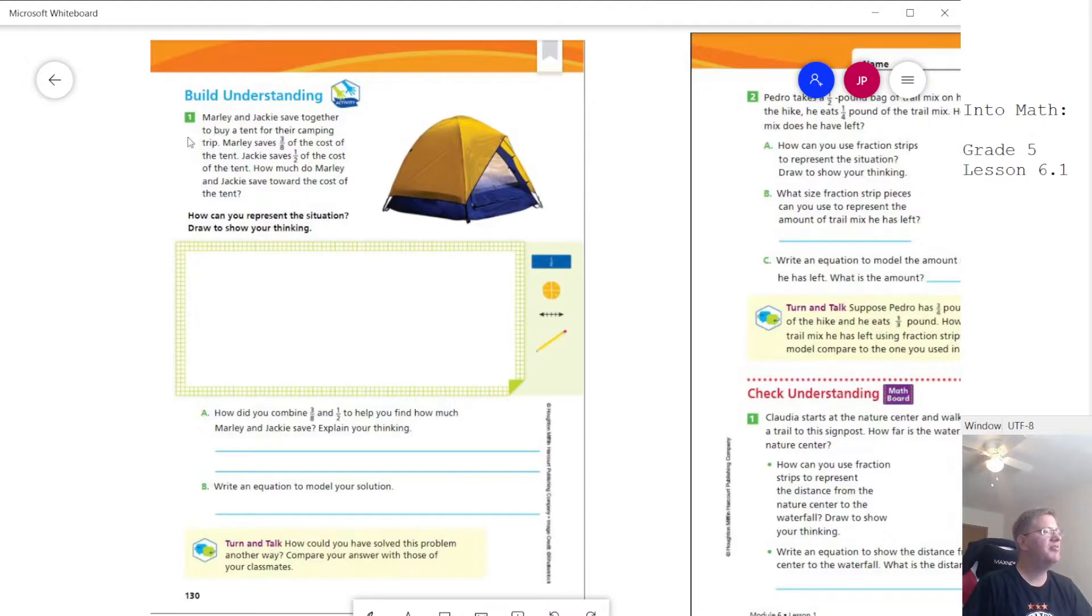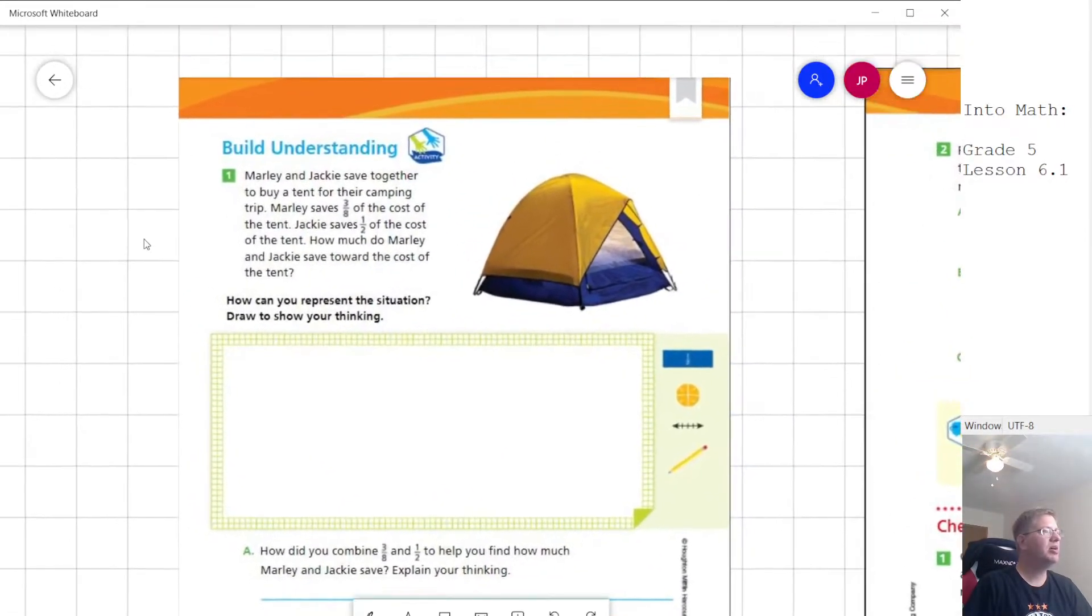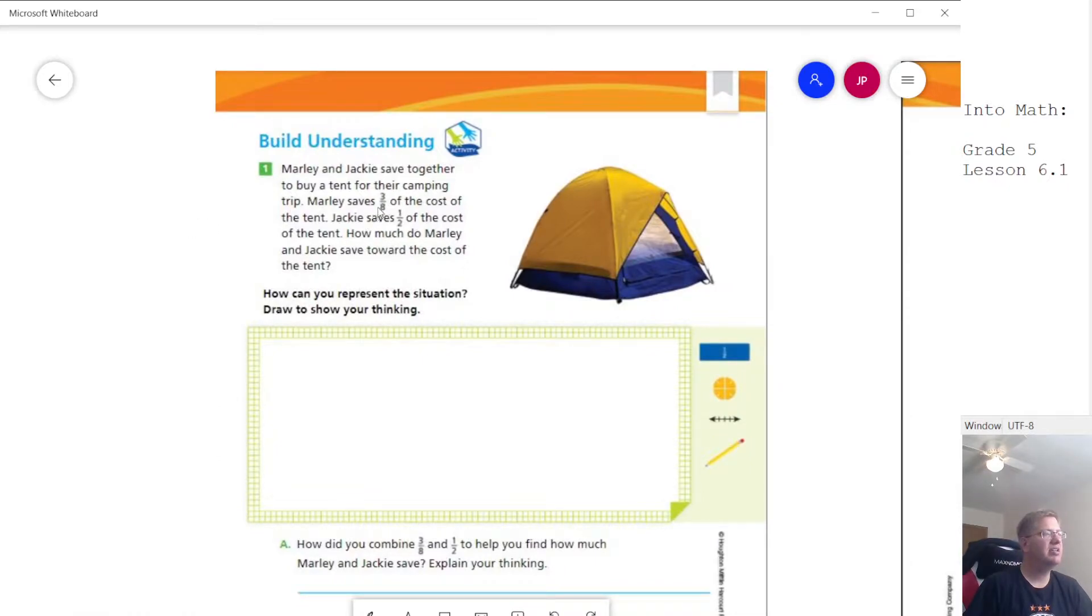So for instance, for our first problem, we are working with Marley and Jackie saving a certain amount. So we have three eighths of the cost for the tent and one half of the cost, and then we want to add those two things together. So one way that we can do this is to go ahead and make fraction strips. So I'm going to have this be the whole, we'll make this be a half. Actually, I'm going to take that back. I'm going to make this be the part that Jackie saves.